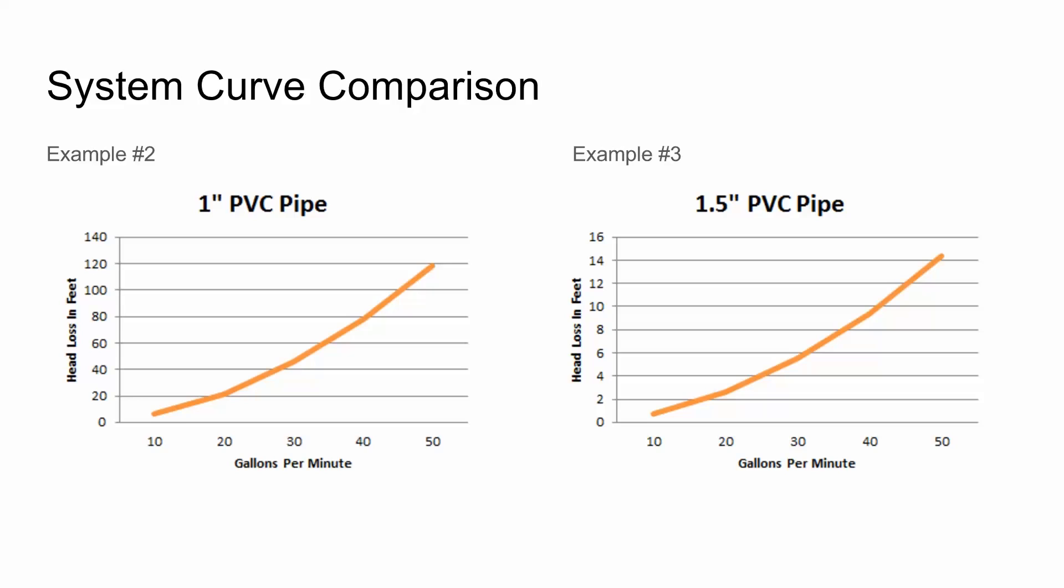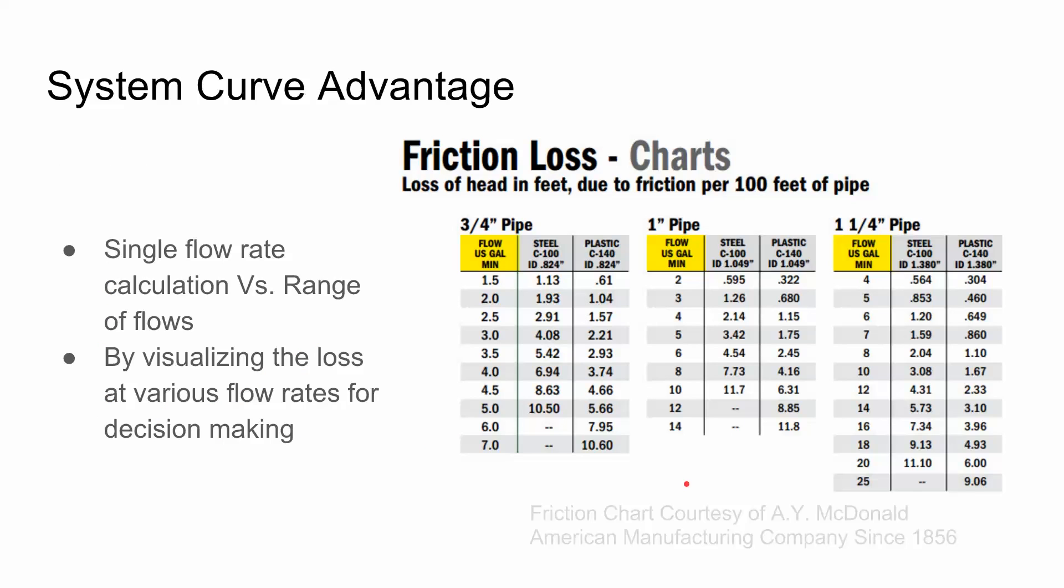When you're trying to compare different components in the system, having a system curve can definitely provide an advantage. Now when we compare a system curve to the traditional method, as I mentioned before, we're using a chart. This chart was provided courtesy of A.Y. McDonald, an American manufacturing company that's been in business in the United States since 1856. They manufacture high quality plumbing parts as well as pumps.